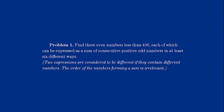Problem 1. Find three even numbers less than 400, each of which can be expressed as a sum of consecutive positive odd numbers in at least six different ways. As a clarification, two expressions are considered to be different if they contain different numbers. The order of the numbers forming a sum is irrelevant. This question asks us to find an even number that is a sum of odd numbers, and so we're going to have to have an even number of odd numbers to end up with an even number at the end.